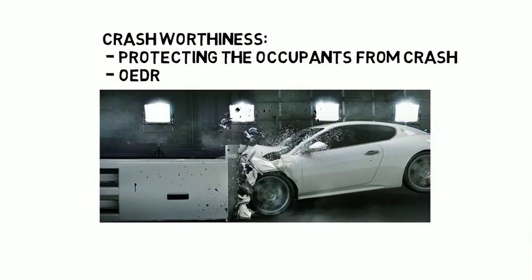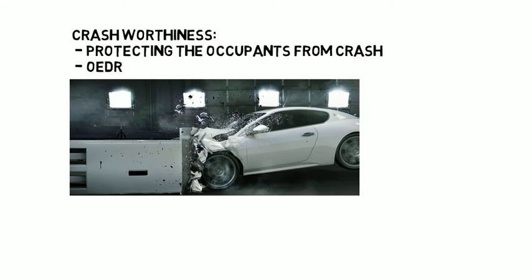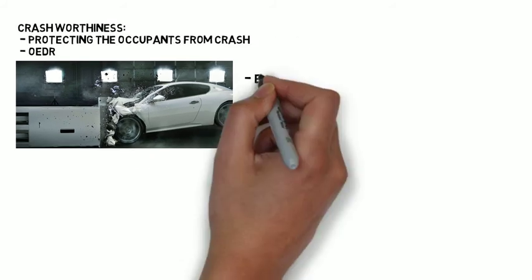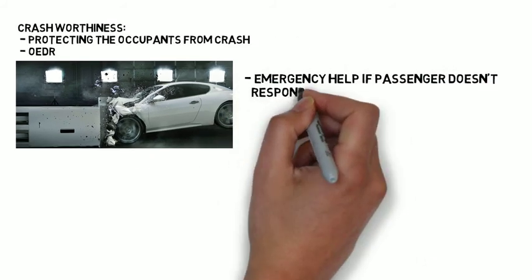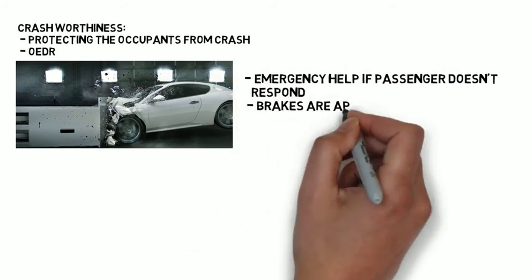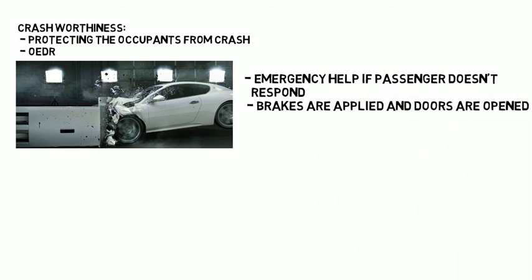The post-crash behavior of a vehicle refers to the return of the vehicle to a safe state after a crash. For example, the vehicle requests emergency help if the passenger doesn't respond, or the brakes are applied immediately and the doors are opened to let the passenger get off the vehicle.